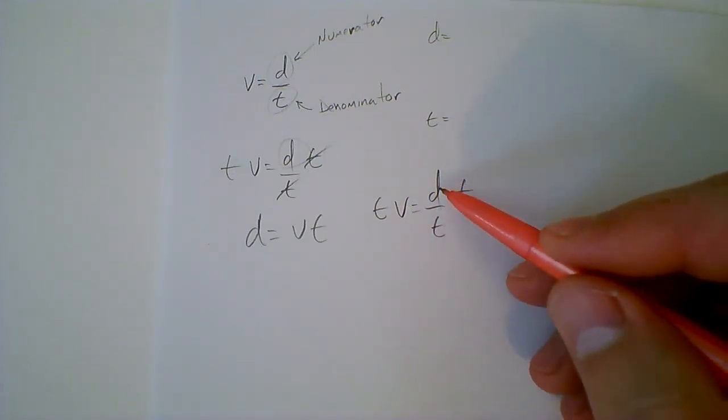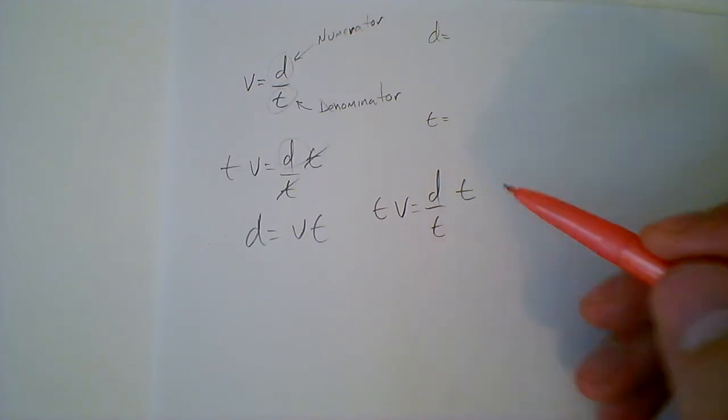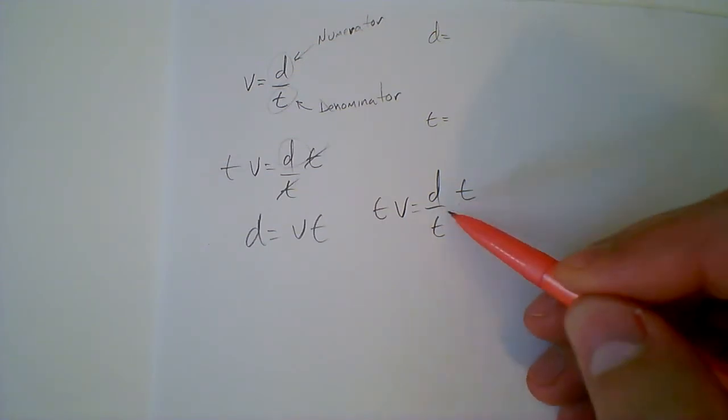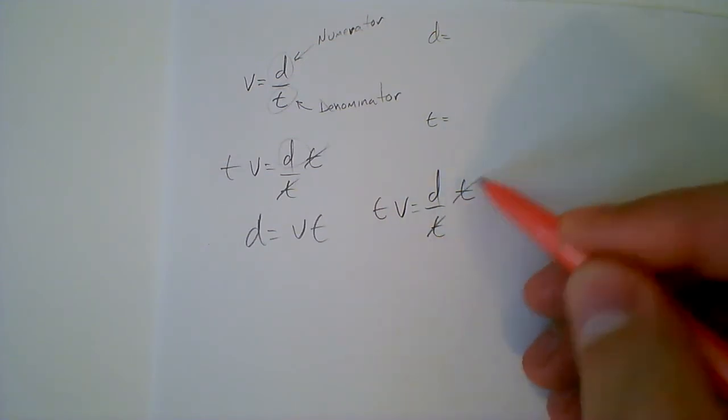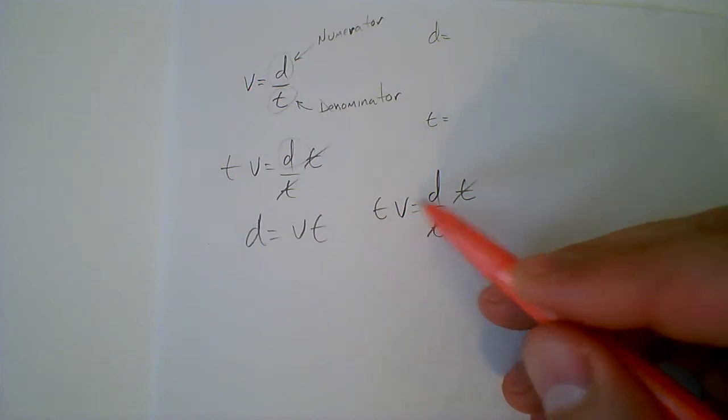What that means is I'd have 1 over t, and I can't do that. So I want to get t to the top. I multiply t out by both sides. Once I do that, I have tv equals d.